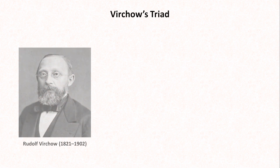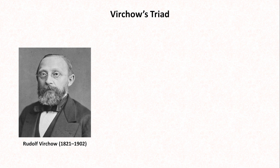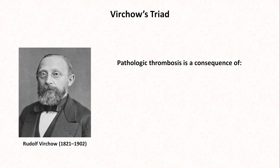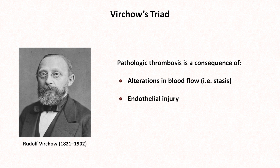Before diving into specific conditions, when discussing hypercoagulability, it's helpful to start with Virchow's triad, named after a German physician who was among the first to offer a modern description of thrombosis and embolism, though he does not appear to have described the triad in the terms we do today. Virchow's triad states that pathologic thrombosis is a consequence of either alterations in blood flow — that is stasis — endothelial injury, or alterations in the constituents of blood, for example, abnormal levels of clotting or anti-clotting factors.